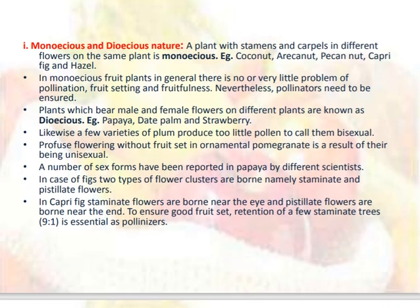A plant with stamens and carpels in different flowers on the same plant is monoecious — for example, coconut, areca nut, pecan nut, caprifig and hazel. In monoecious fruit plants, in general, there is no or very little problem of pollination, fruit setting and fruitfulness, and pollinators need to be ensured. Plants which bear male and female flowers on different plants are known as dioecious — for example, papaya, date palm and strawberry. Likewise, a few varieties of plum produce too little pollen to call them bisexual.